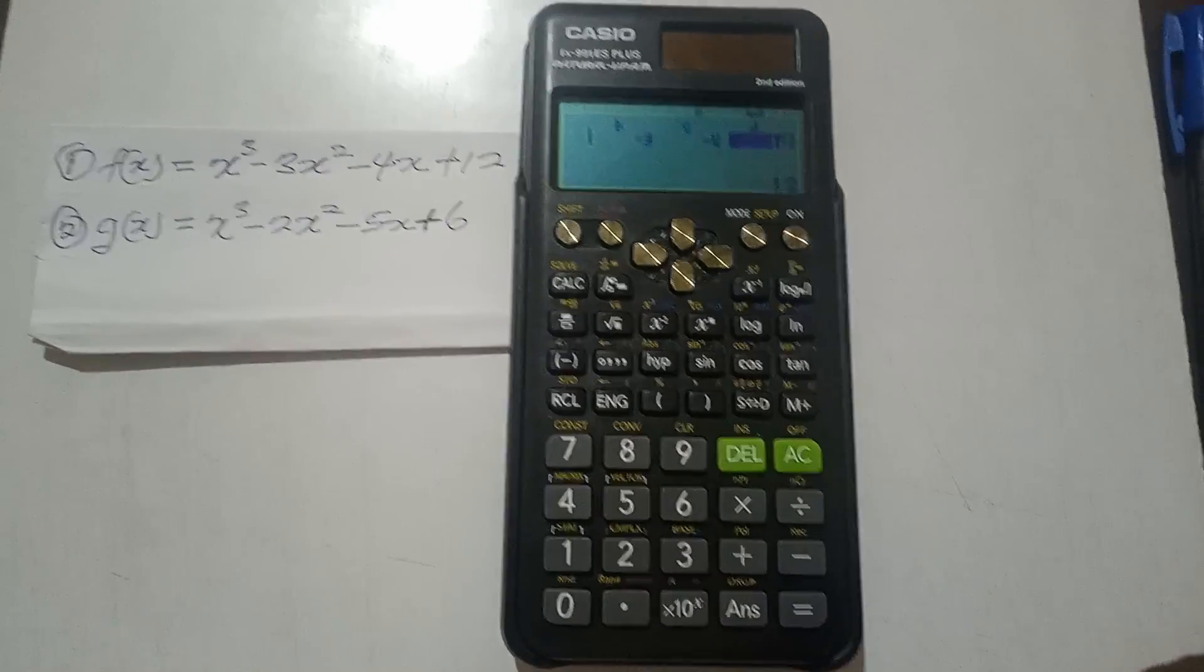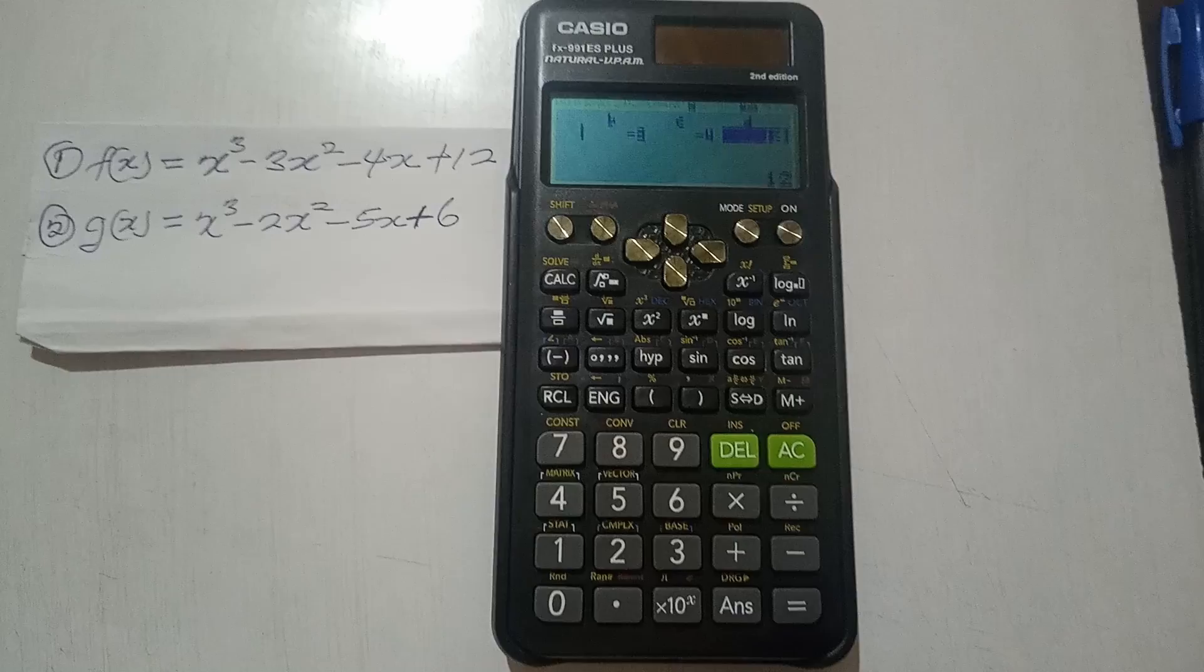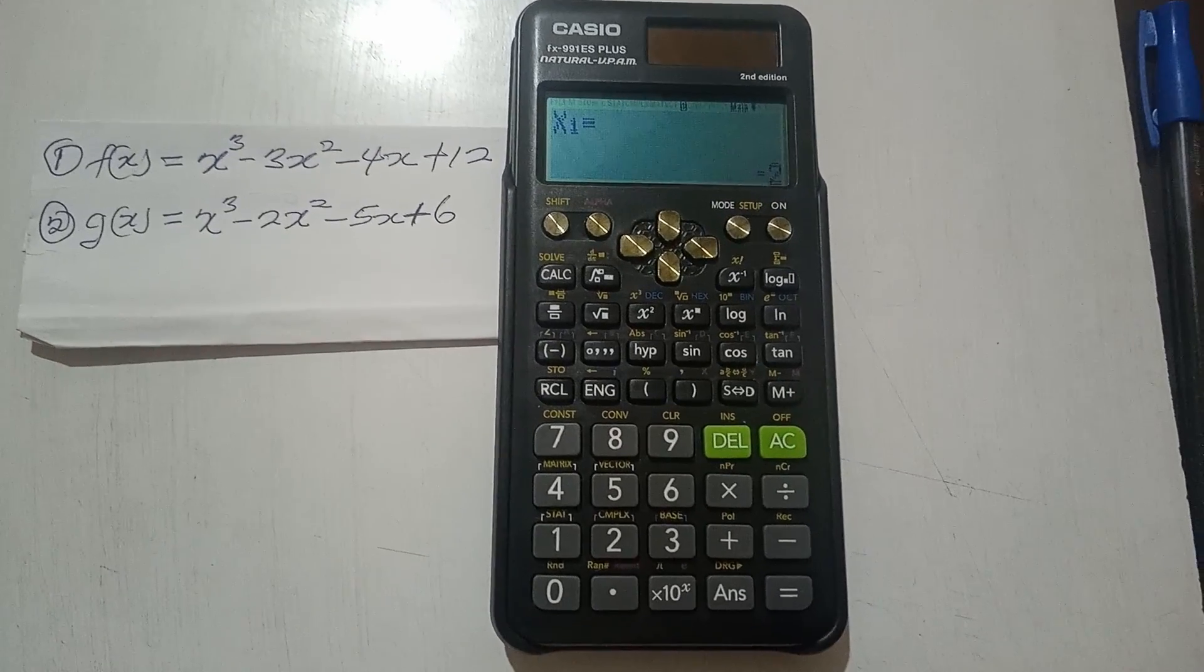So when you press equal to again, it's going to give you the x values, which are the solutions for the equation. And our first solution for x is negative 2. You press equal to again, the second solution is 3.